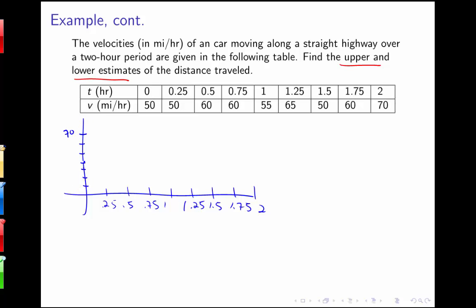At 0, I'm at 50. At 0.25, it's also at 50. At 0.5, we're at 60. 0.75, it's at 60. 1 is at 55. 1.25 is at 65. 1.5, we're at 50. 1.75 is at 60. And 2 is up at 70. To get a rough idea of my velocity curve, I could connect these with some line segments here.